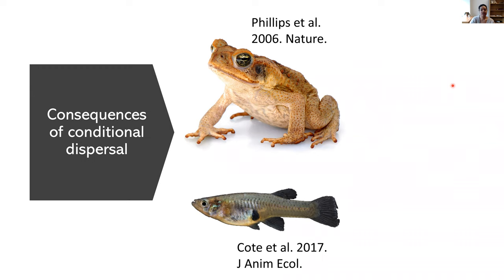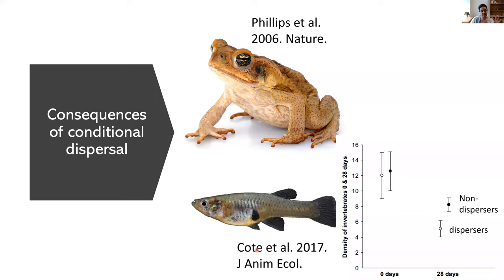This accumulation of dispersive traits at the invasion front has had the consequence that invasion speed has actually accelerated through time — the increase in range is getting bigger every time period. Another example is from Cote et al., who did an experiment with mosquito fish. They first assayed the fish to separate them into highly dispersive and non-dispersive groups, then placed them in tanks with a community of invertebrate prey. The dispersers tended to be larger and more aggressive, and had a larger impact on invertebrate prey density after 28 days compared to non-dispersive fish.